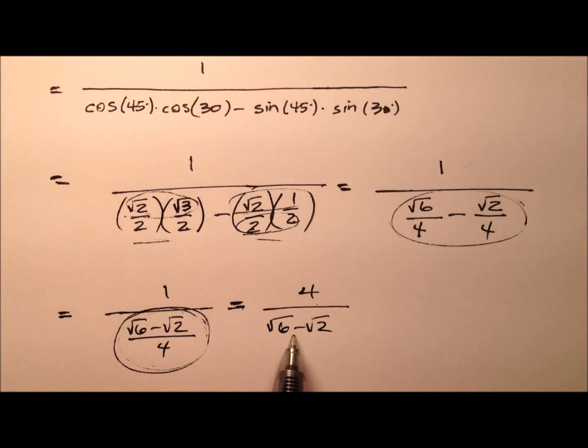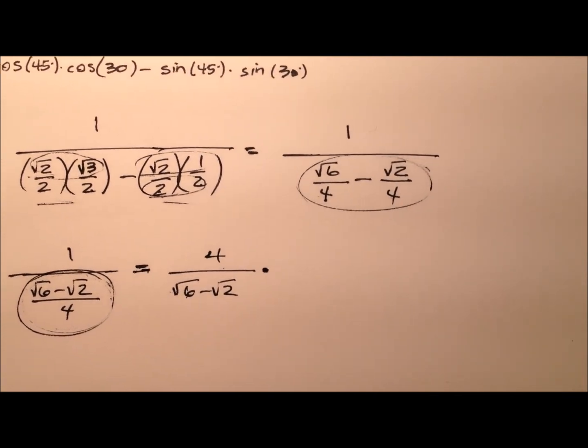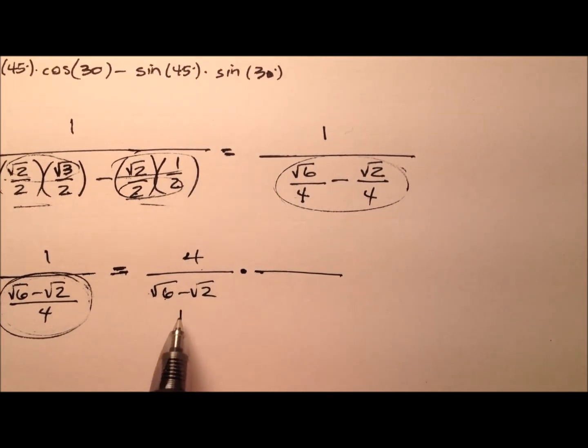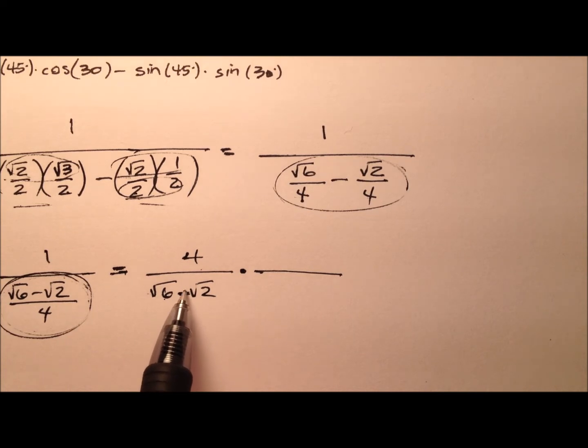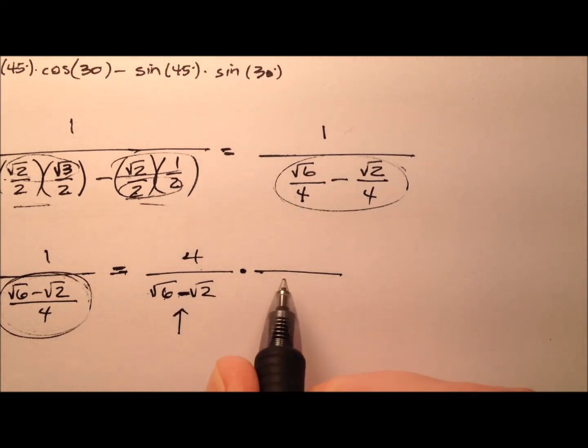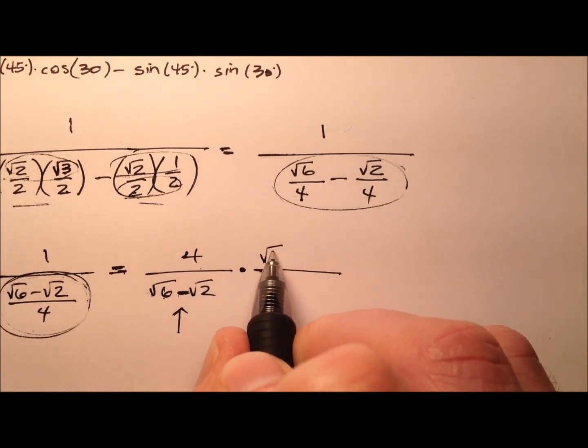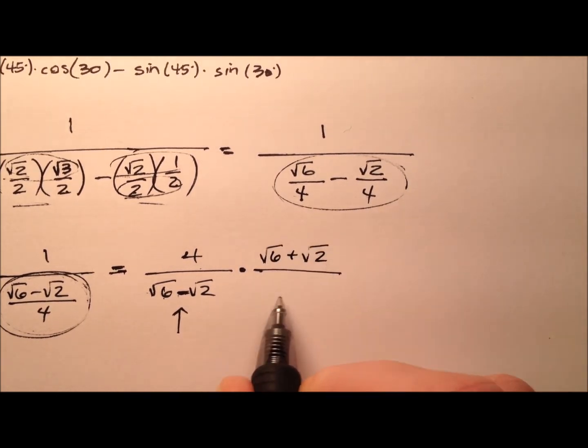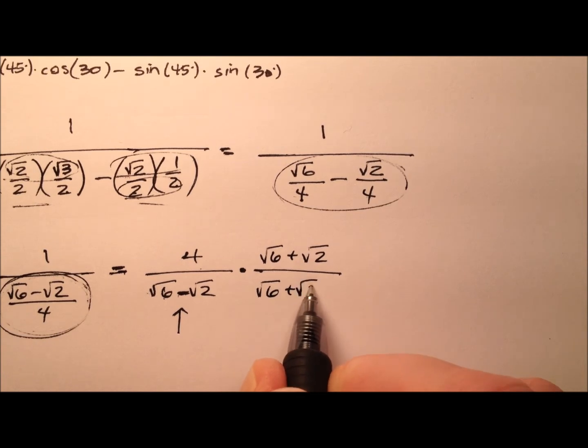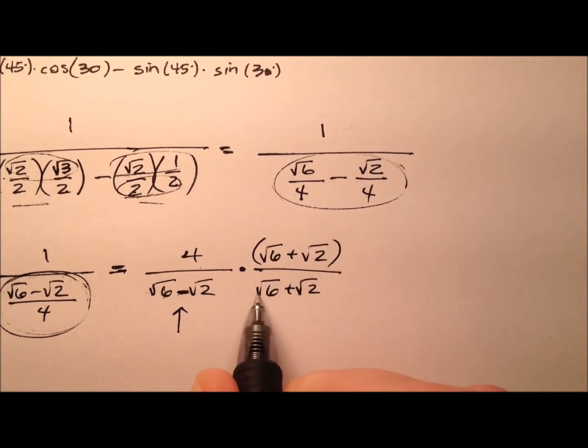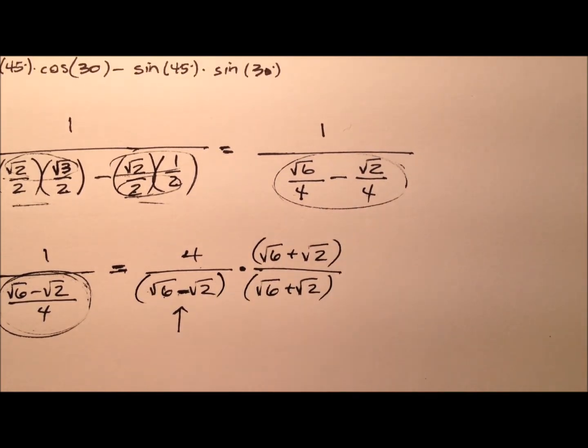But maybe we don't like these radicals in the denominator. So let's rationalize this denominator. We'll rationalize by multiplying the top and bottom by the conjugate of the denominator. And the conjugate just means I'm going to change the sign in the middle. So instead of the square root of 6 minus the square root of 2, let's multiply by the square root of 6 plus the square root of 2.